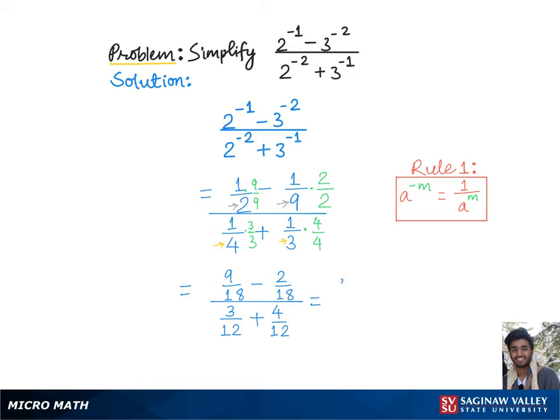Which gives us 9 minus 2 over 18, divided by 3 plus 4 over 12, which is equal to 7 over 18 divided by 7 over 12.